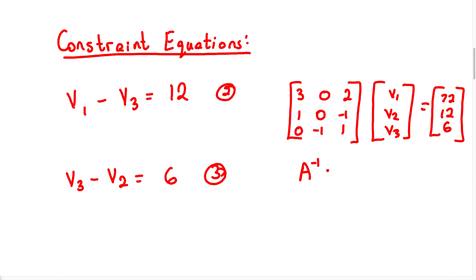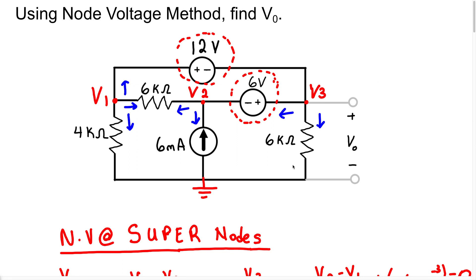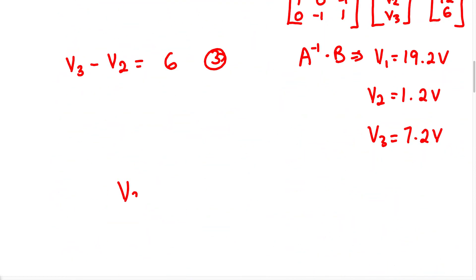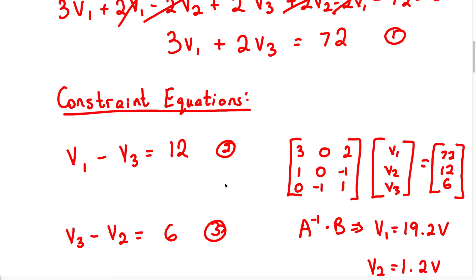Solving the matrix gives us V1 equals 19.2 volts, V2 equals 1.2 volts, and V3 equals 7.2 volts. The question asked us to find VO, which is the voltage across the 6K resistor — the same as the voltage at node 3. Therefore, VO equals V3 equals 7.2 volts, which is our answer for this problem.